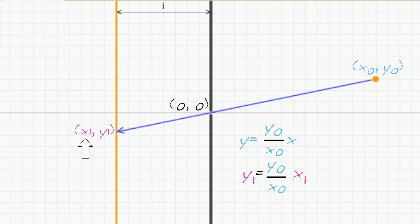And notice the diagram tells us that X1 is negative, and a distance I away from the origin. That is, we know X1 equals minus I. Finally, to get Y1, we just substitute to give us Y1 equals minus Y0 over X0 times I.